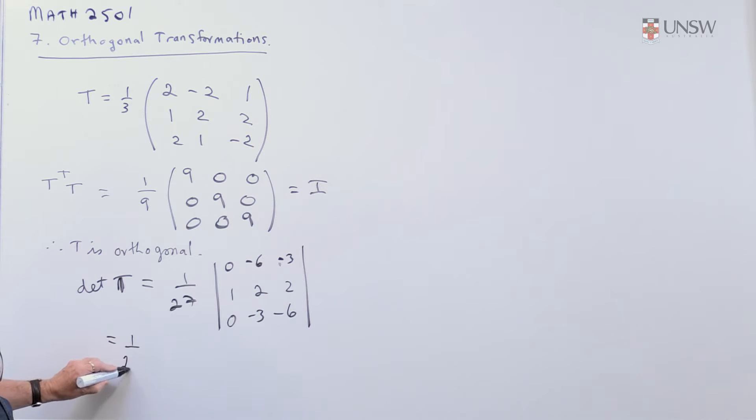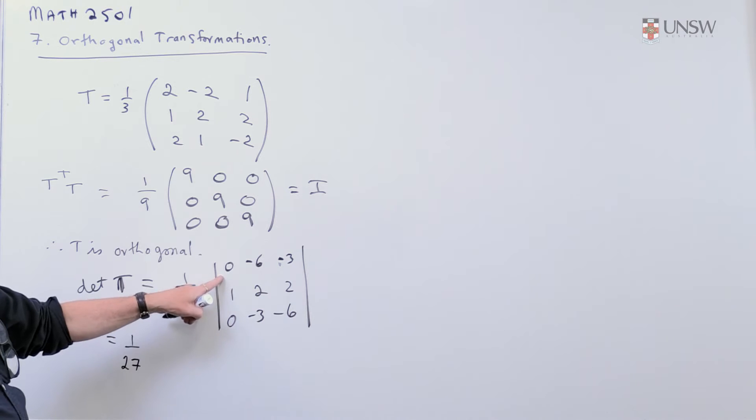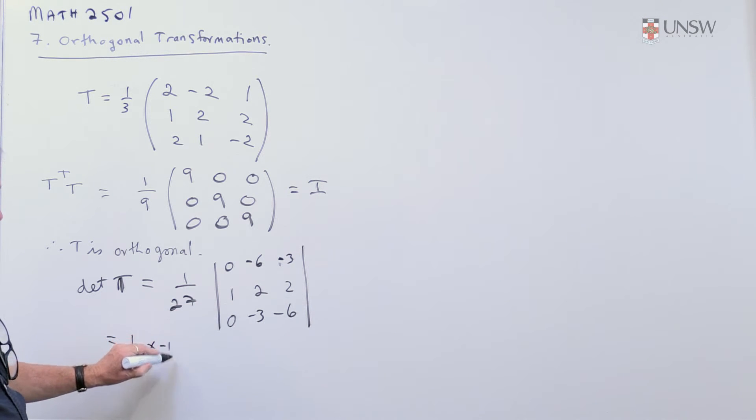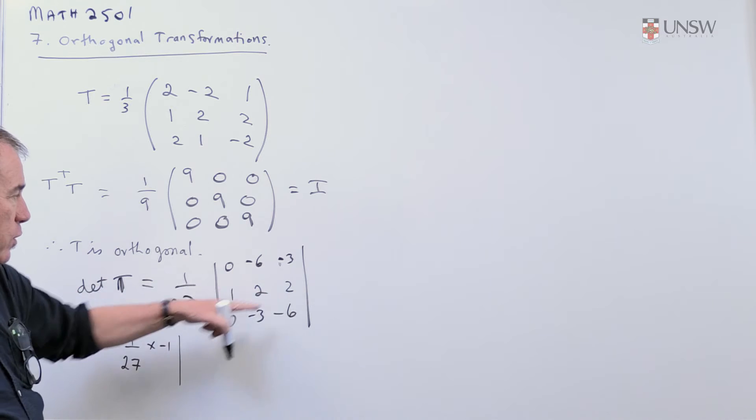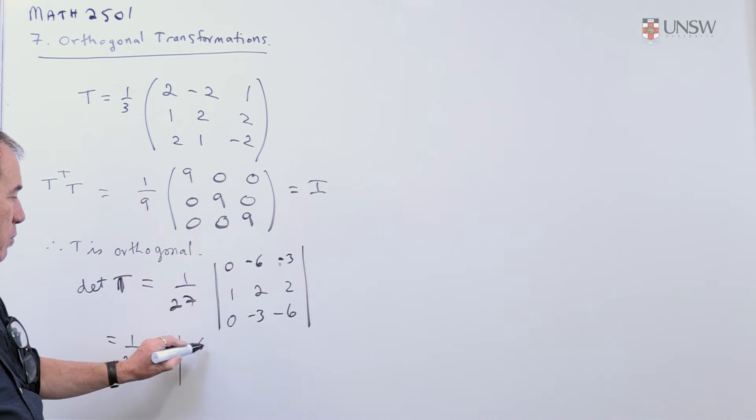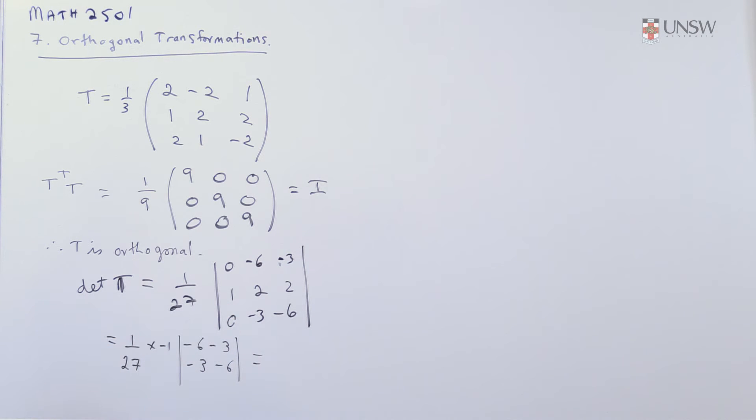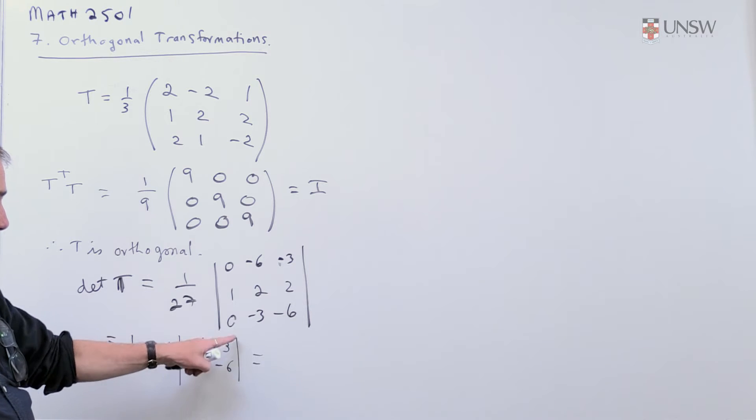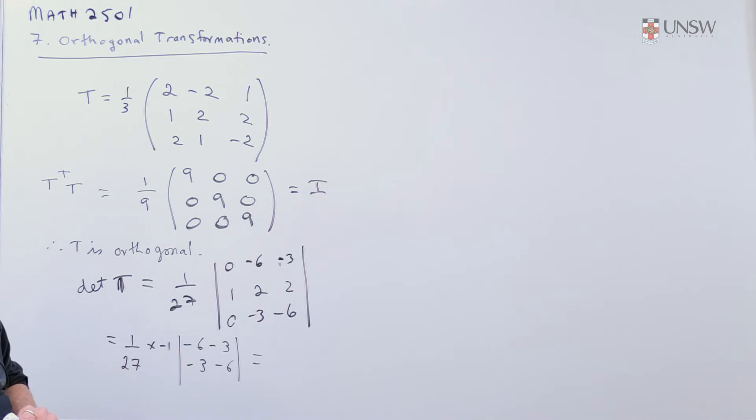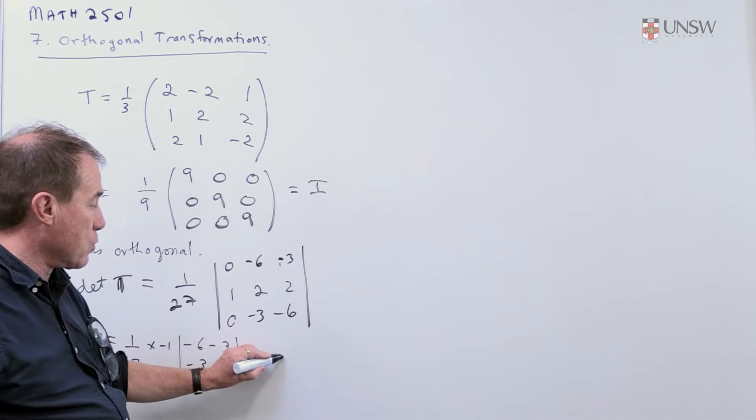And now I can expand down the first column. So I get 1 over 27 times zero times I don't care, minus 1 times what's left when I cross out the row of columns. So I get minus 6 minus there, and then plus zero times I don't care. Now, here you get 36 minus 9, which is 27, cancels, gives me minus 1.